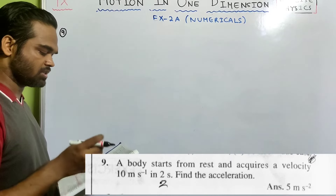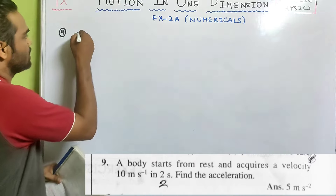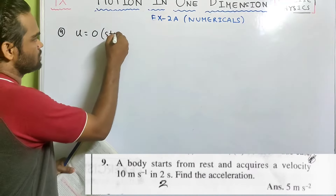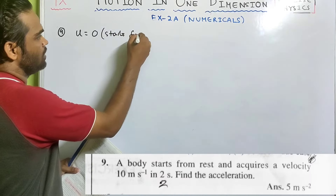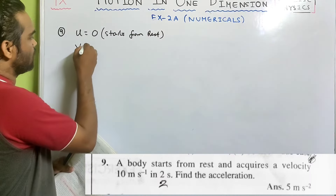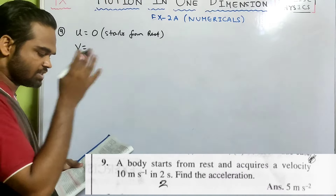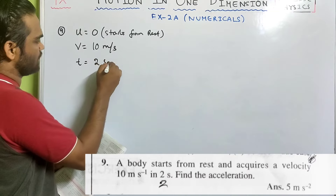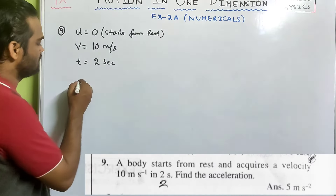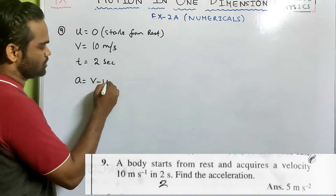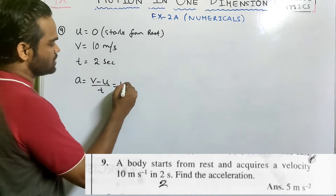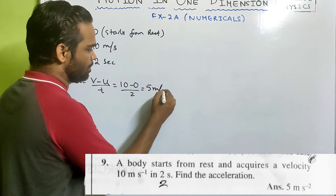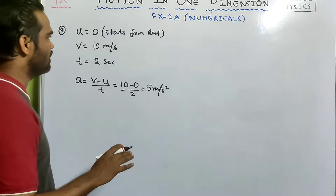Sum 9: a body starts from rest (u = 0) and acquires a velocity of 10 m/s in 2 seconds. Acceleration = (v - u)/t = (10 - 0)/2 = 10/2 = 5 meter per second squared.